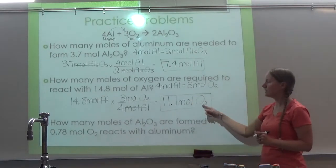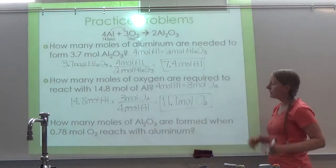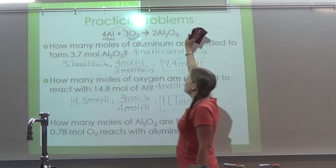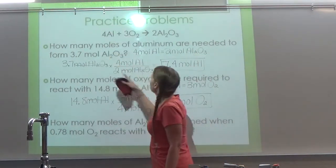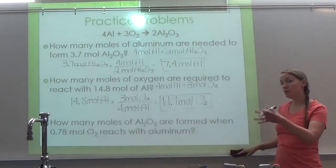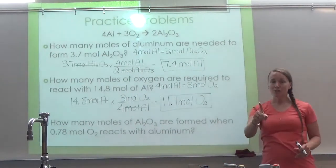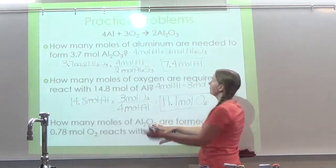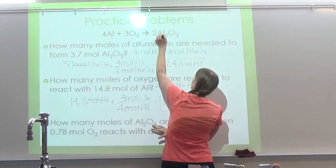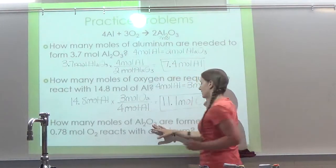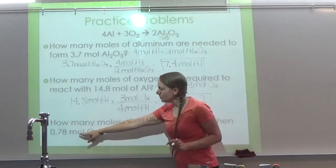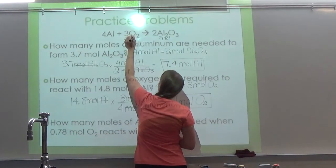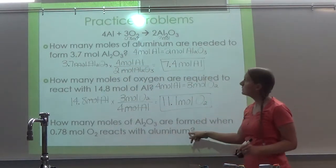Notice: number, unit, substance, every single time. If you have not paused this and tried one, make sure you try this bottom one. When we do it together, I'm not going to write out the conversion factor this time — we're just going to do it in our minds. So how many moles of Al₂O₃ are formed when 0.78 moles of oxygen reacts with aluminum?